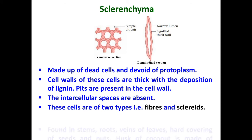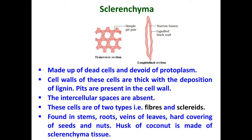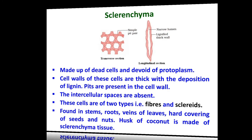Sclerenchyma is found in stems around the vascular bundles, and is also found in roots, veins of leaves, and the hard covering of seeds and nuts. You should know that the husk of coconut is made up of sclerenchyma tissue.